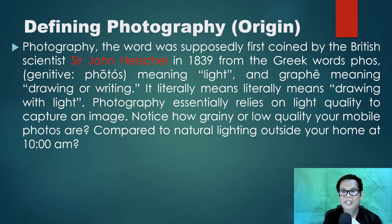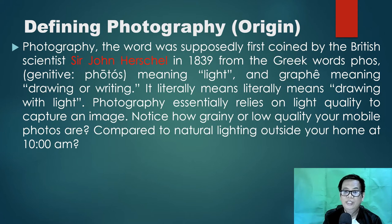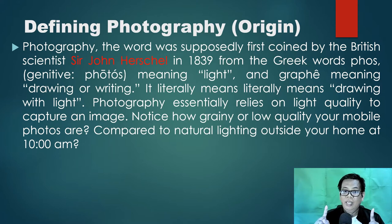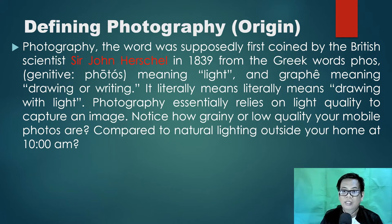Let's start with the origin of the word photography. According to this, the word photography was supposedly first coined by the British scientist Sir John Herschel in the year 1839, from the Greek words 'phos' or 'photos' meaning light, and 'graphe' meaning drawing or writing. It literally means drawing with light.